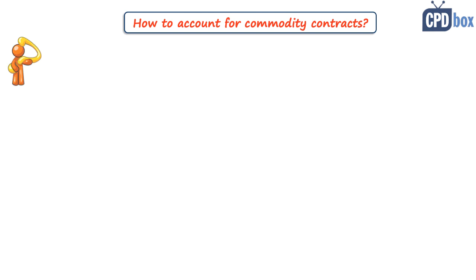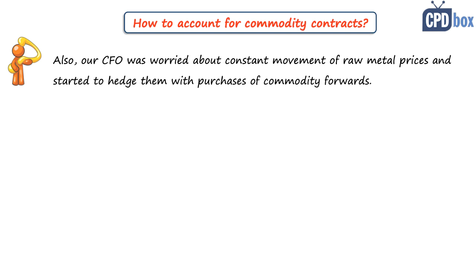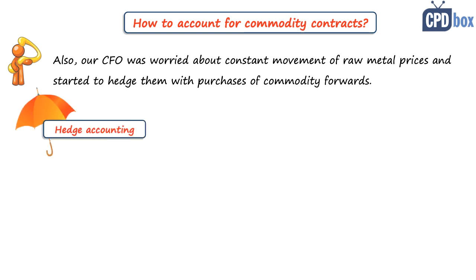Lee's question is really excellent because he asks one more thing. Also, our CFO was worried about constant movement of raw metal prices and started to hedge them with purchases of commodity forwards. So you have price risk here and you want to hedge it. But in this case you would need to apply hedge accounting criteria and test hedge effectiveness, which is quite a burden. So there's another way.